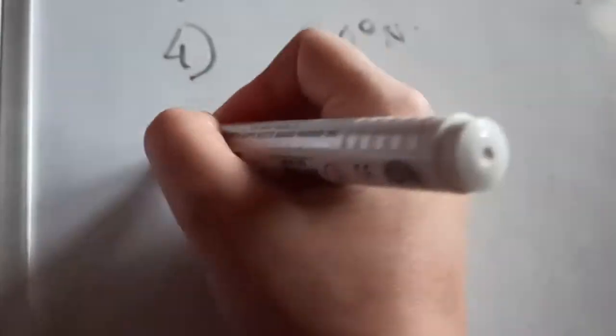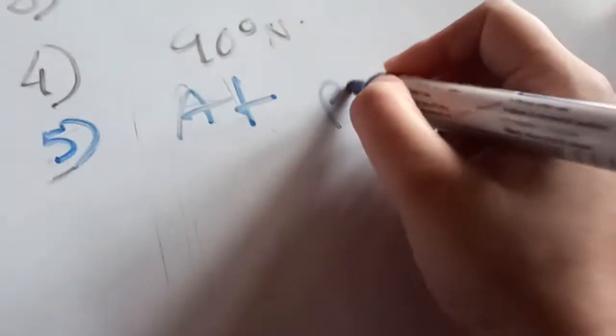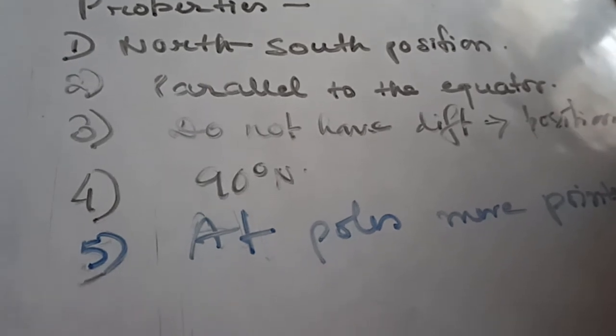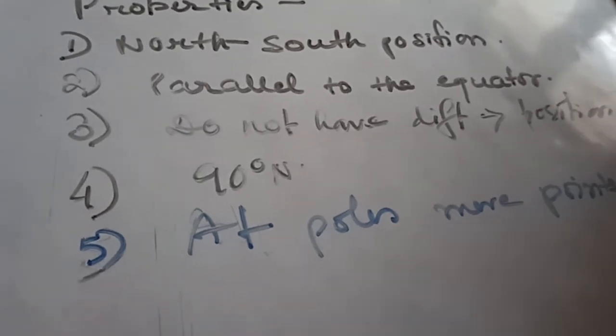The next point is that at the poles, the latitudes are mere points, because we all know that the north pole and the south pole are just points. So these are some of the properties of the parallels of the latitudes.